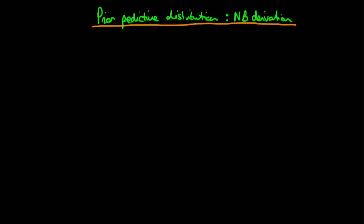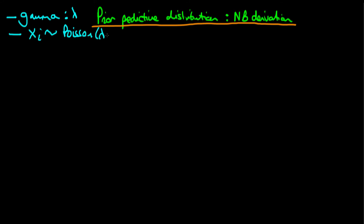In this video I want to derive the prior predictive distribution for the example of when we have a gamma prior on lambda, and we're assuming that our observations are themselves Poisson distributed with this parameter lambda.